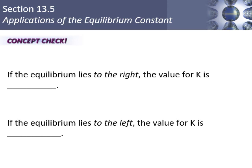Concept check: if the equilibrium lies to the right, the value for K would be high — greater than one, meaning more products than reactants. If the equilibrium lies to the left, the value for K would be low — less than one. You'll want to remember these relationships because they show up on exam questions.